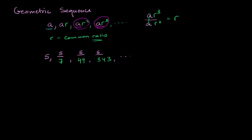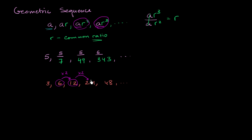Let me give you another one. Say I have 3, 6, 12, 24, 48. Is this a geometric sequence, and if so, what is the common ratio? You can figure it out by dividing any two successive terms. 12 divided by 6 is 2, so we multiply by 2. To go from 12 to 24, you multiply by 2. From 24 to 48, multiply by 2. From 3 to 6, multiply by 2. So there's a fixed common ratio, and this clearly is a geometric sequence.